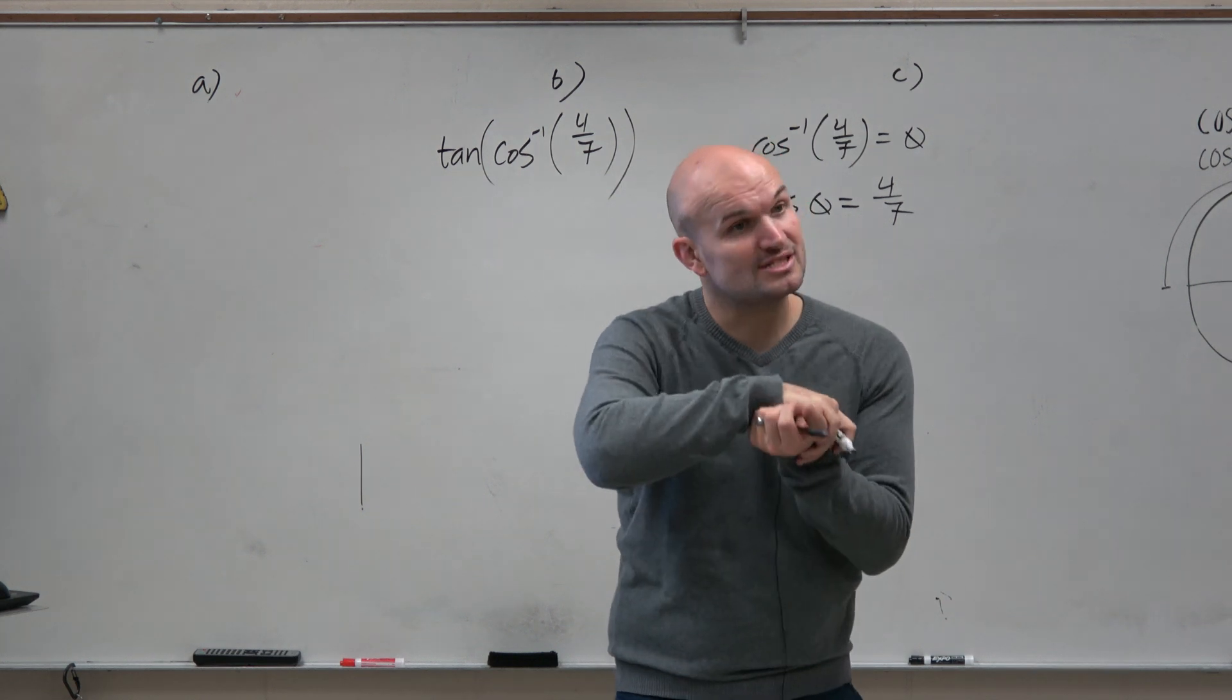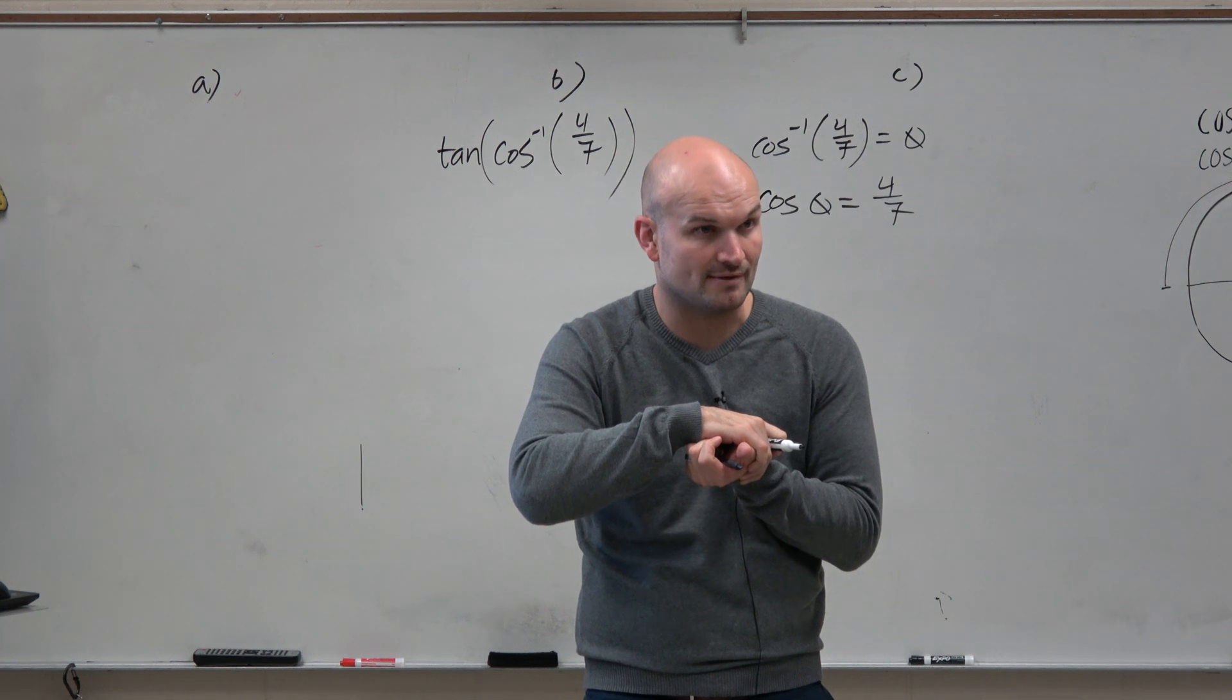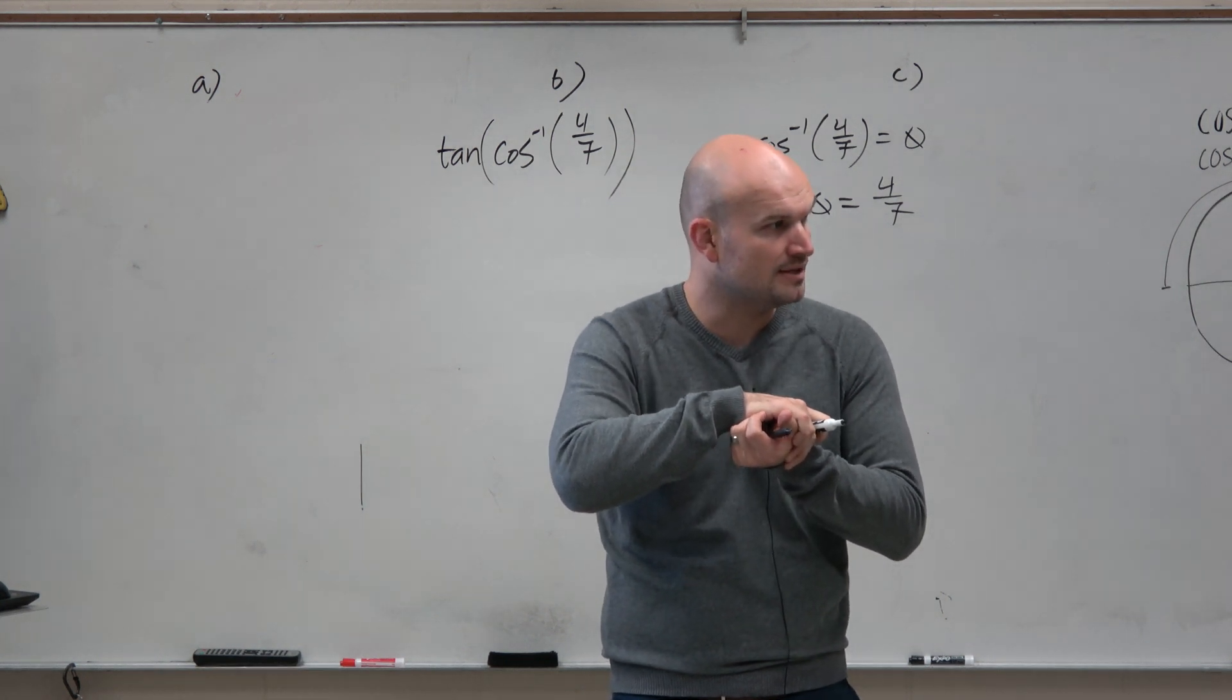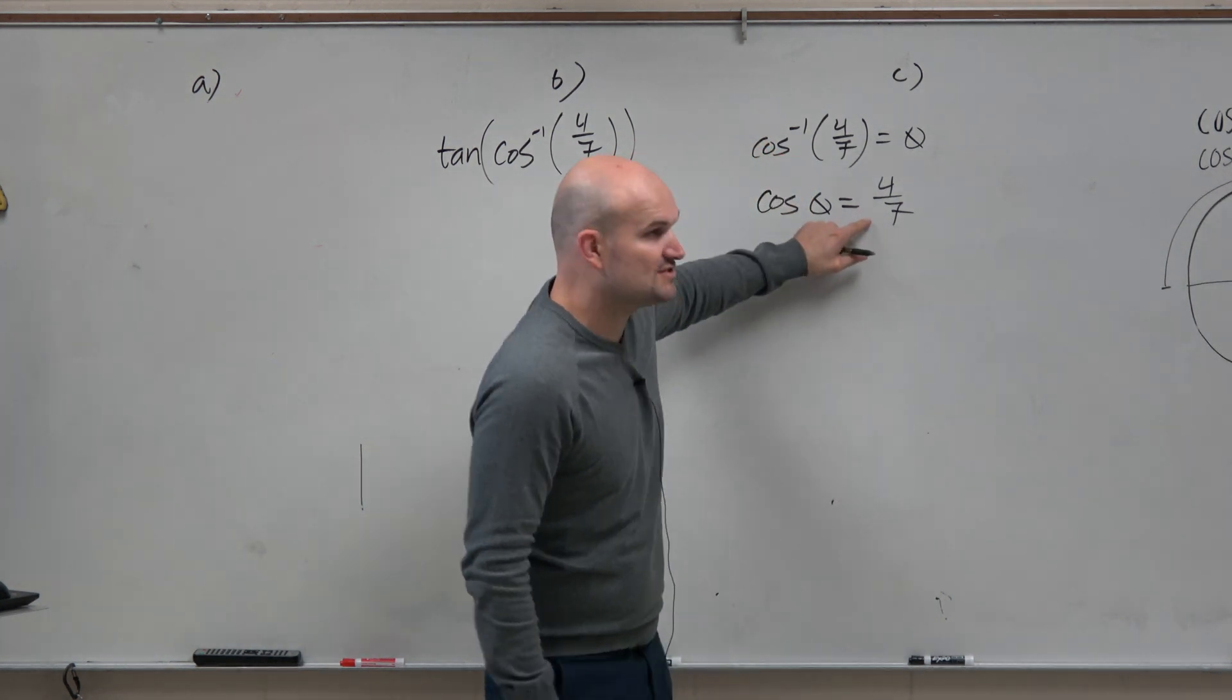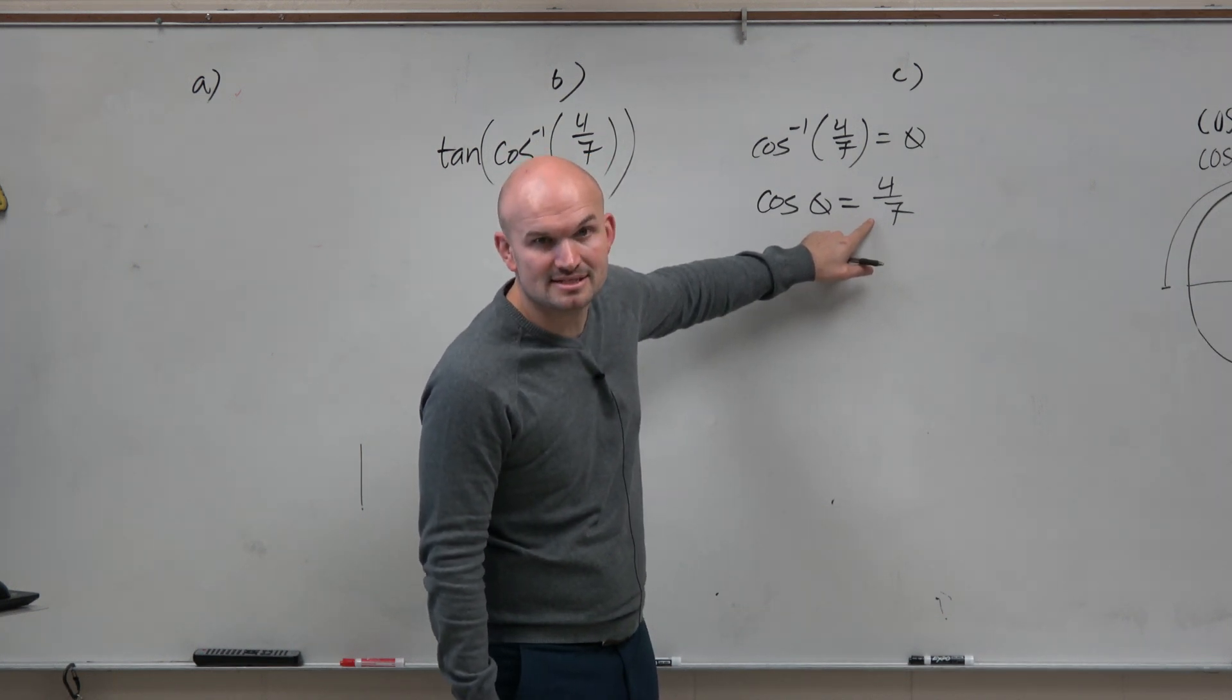Now, by understanding that that is the same statement, just written in a different form, written as cosine instead of cosine inverse. I recognize 4 over 7 was not a coordinate point on the unit circle. So my life is not easier since I know the unit circle.